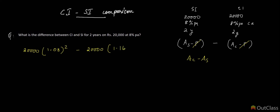two years is just 16% under SI). This becomes Rs. 20,000 × 1.1664 (since 1.08² = 1.1664). If you subtract: 1.1664 - 1.16, taking 20,000 as common, you get Rs. 20,000 × 0.0064.